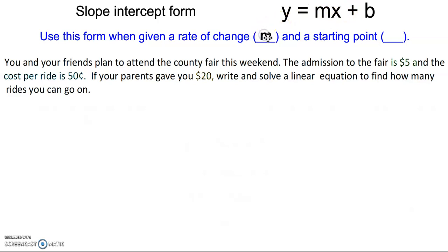It's going to give us the slope, or the rate of change, and a starting point, which is b, which is our y-intercept. So as we read through this problem: you and your friends plan to attend the county fair this weekend. The admission to the fair is $5, and the cost per ride is 50 cents.